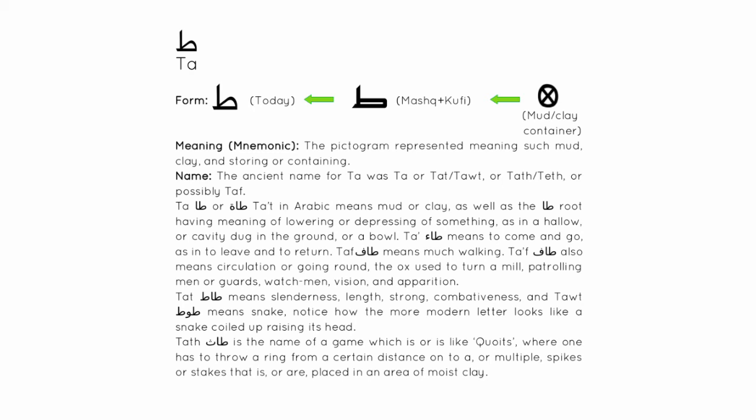Ta'a means to come and go, as in to leave and to return. Ta'af means much walking and also means circulation or going around — the ox used to turn a mill, patrolling men or guards, watchmen, vision, and apparition. Ta'a alif ta'a means slenderness, length, strong, and combativeness. Ta'a wa ta'a means snake. Notice how the modern letter looks like a snake coiled up raising its head. Ta'a is also the name of a game like koits, where one throws a ring from a distance onto spikes placed in an area of moist clay.